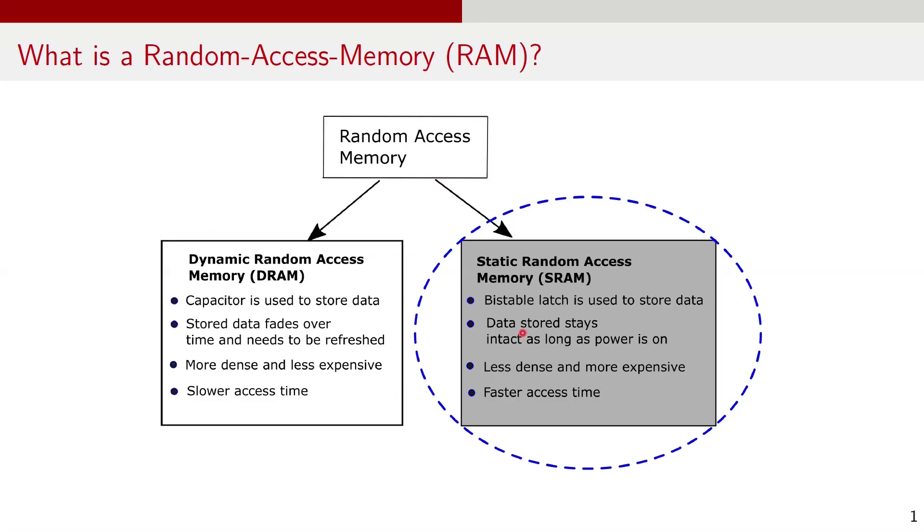Since SRAM does not need constant refreshing, it consumes less power when idle, but more power per bit compared to DRAM during active operation. SRAM cells are used in cache memory in CPUs, high-speed registers, while DRAMs are used in main system memory in most computers.